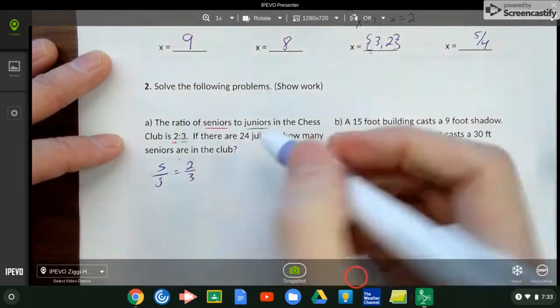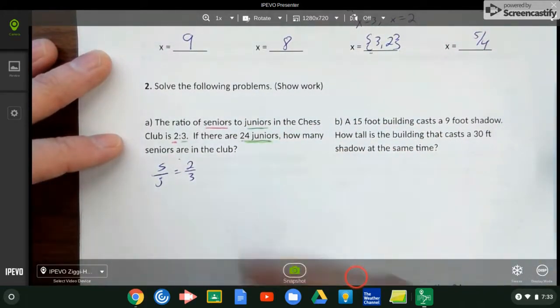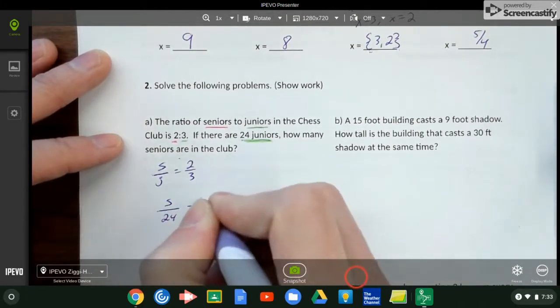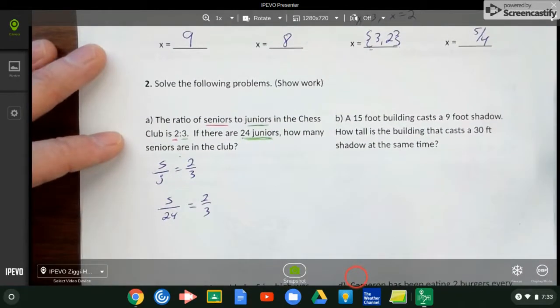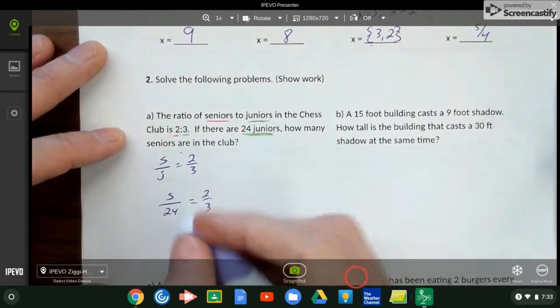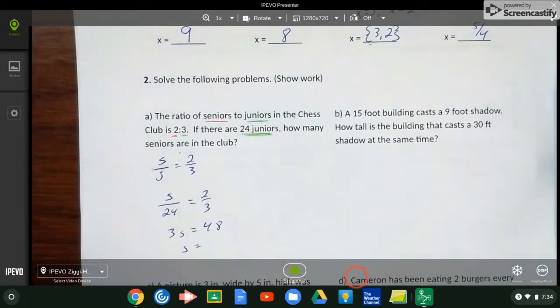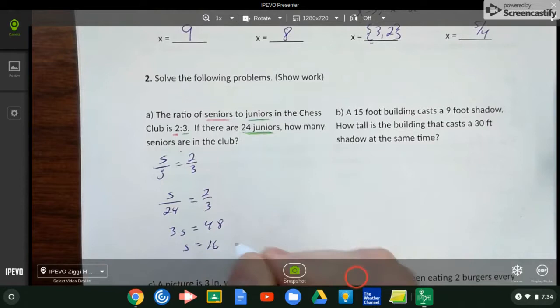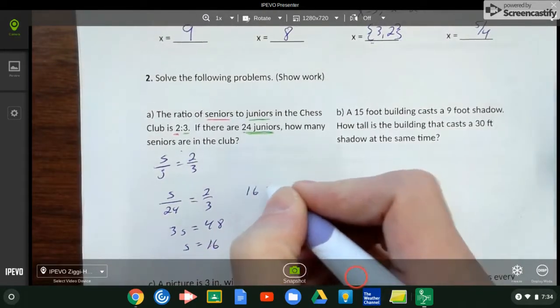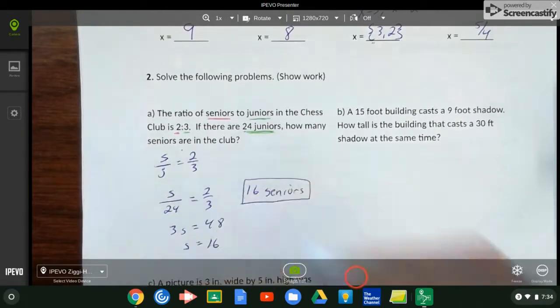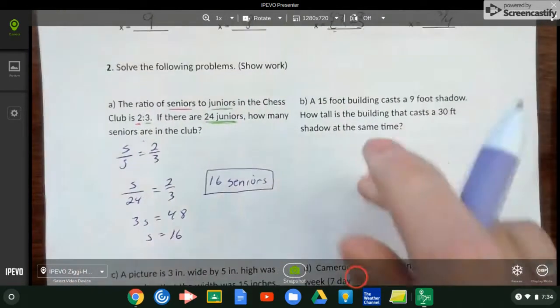How many seniors are in the club? We're looking for - we know how many juniors are, so that's the juniors, 24 juniors. So when I put this into my problem: seniors over 24 equals 2 over 3. Once you've got that set up, it's pretty easy. So 3s equals 48, s therefore is 16. So there's my solution: 16 seniors. Try B, see how you do.